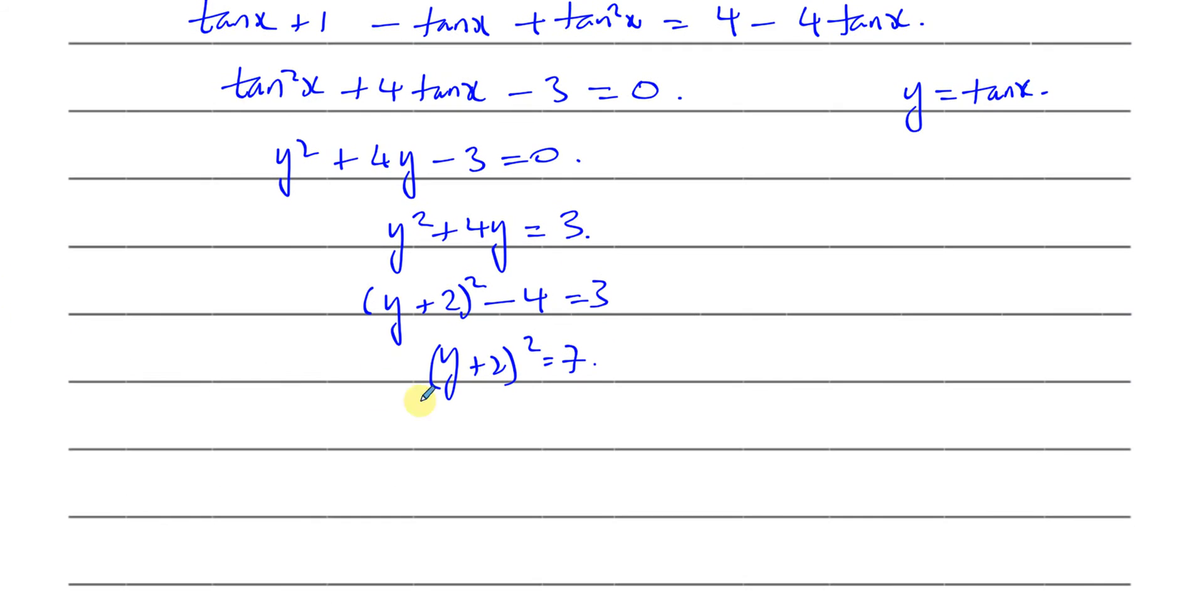So that means I'm going to say that Y plus 2 is equal to plus or minus the square root of 7. So Y equals minus 2 plus or minus the square root of 7. So now what I can say is that tan of X, because we said Y equals tan of X, so tan of X is either equal to minus 2 plus root 7, or the tan of X is equal to minus 2 minus root 7.